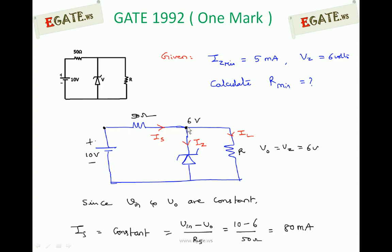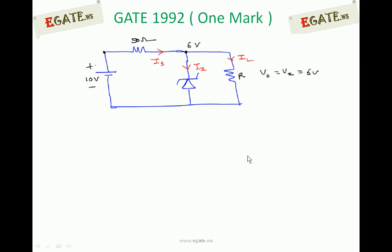Out of that, some current goes through the Zener diode and some goes through the load resistor. IS can be written in three different ways: IS is the sum of Zener current and load current. If the Zener current is maximum, minimum current should go through the load, so you can write IS as IZ maximum plus IL minimum.